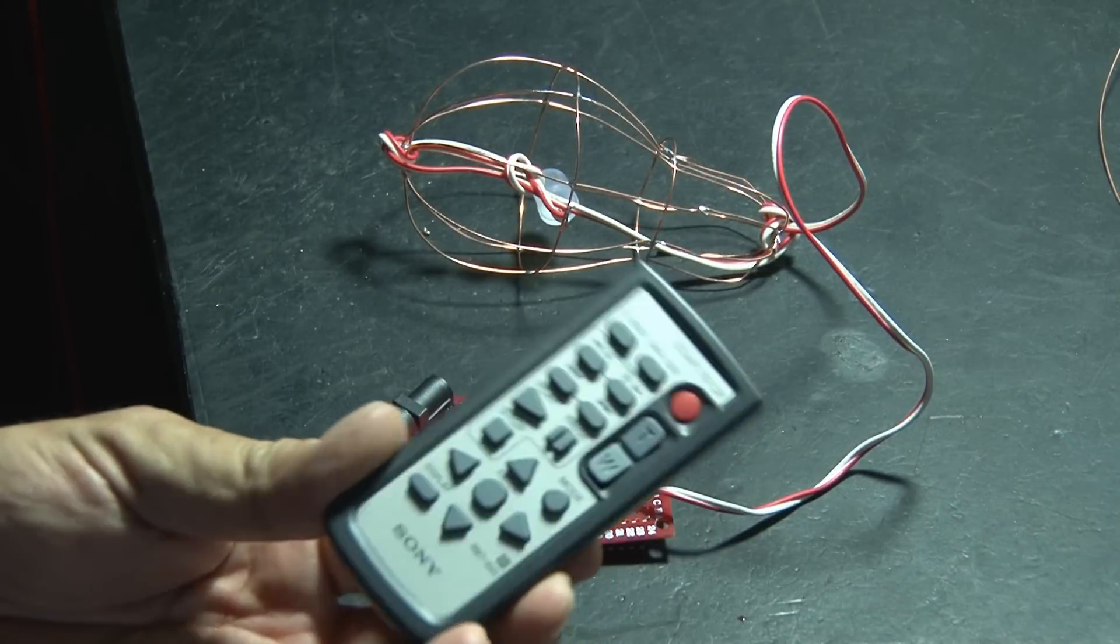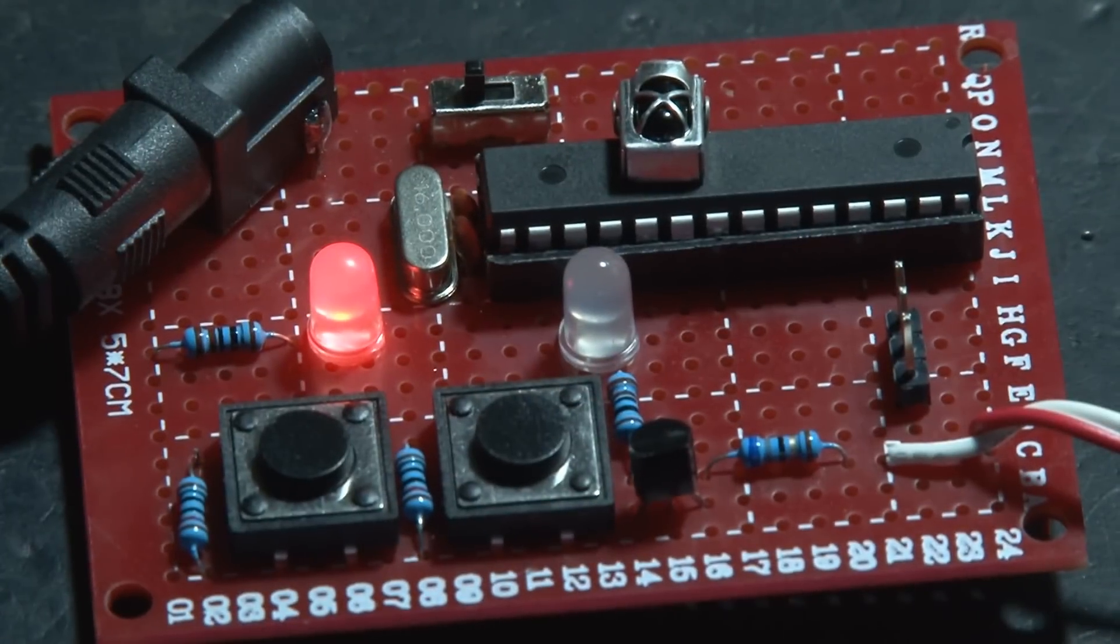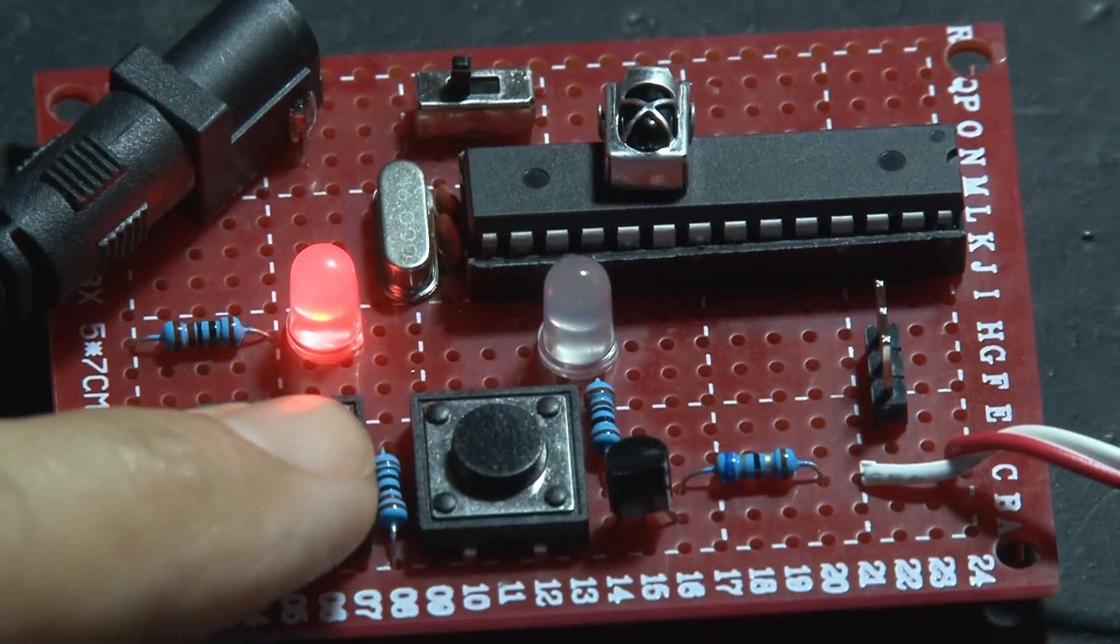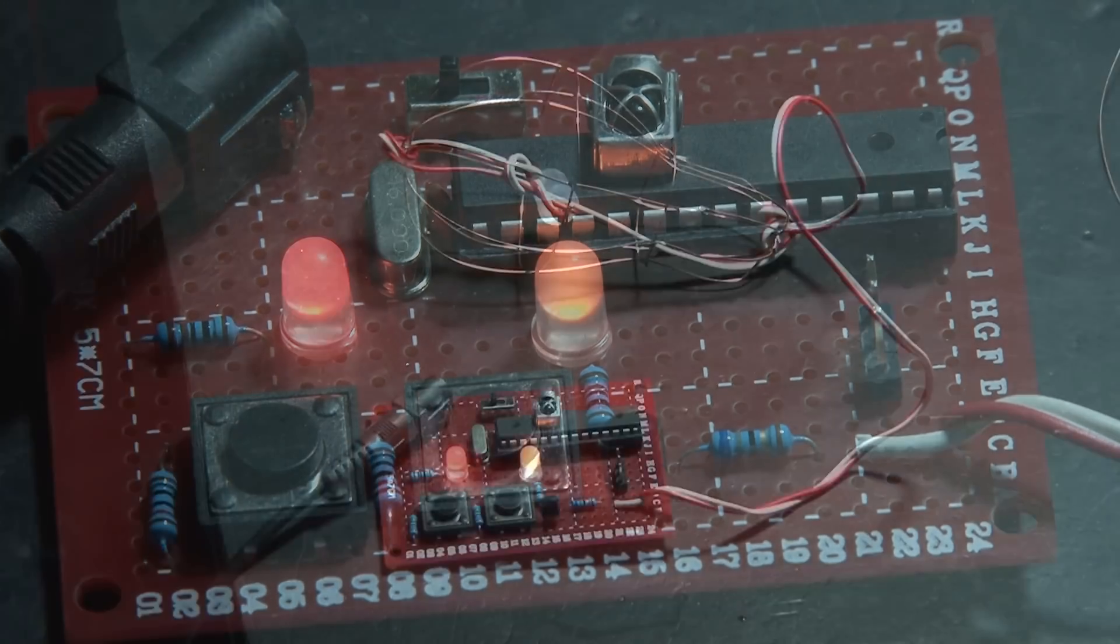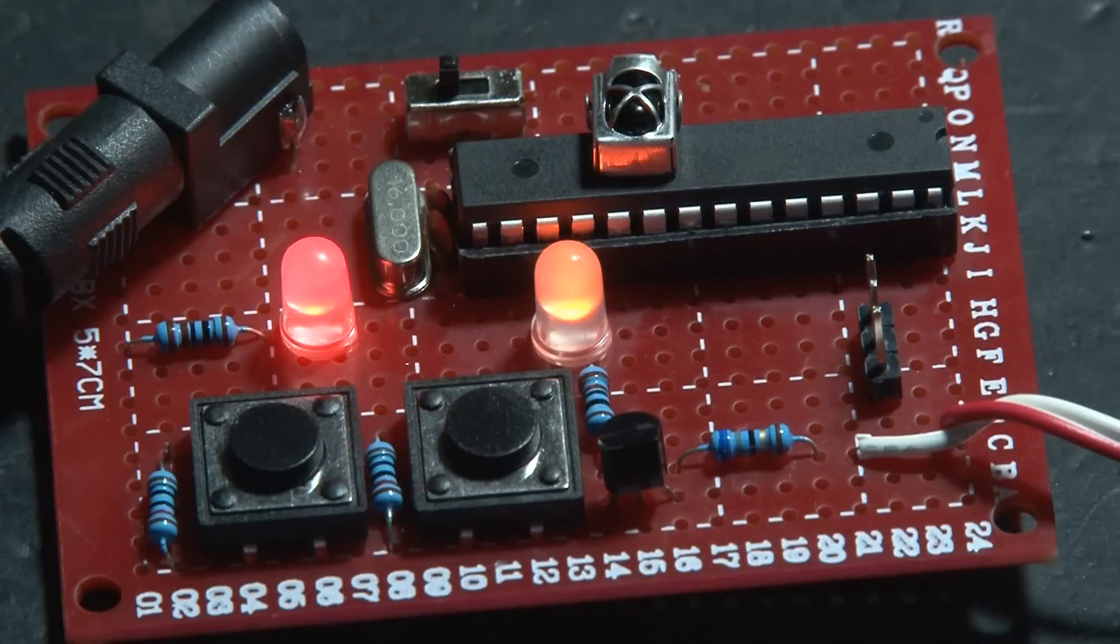To test it out, I'm going to use the small remote that goes with my video camera. Press one of the two programming buttons and hold them down until the amber LED lights up. Then simply point your remote at our thingy and press any button you want to use. The LED will go out, indicating it's learned that button.